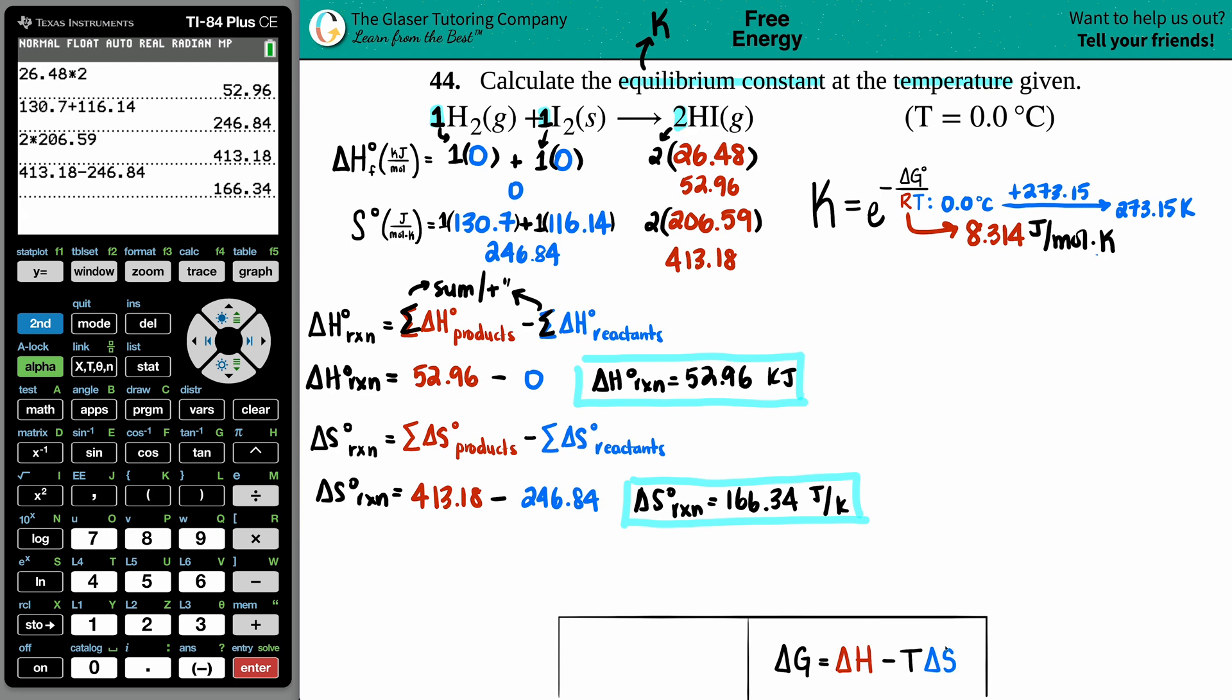We finally found the delta H, we finally found the delta S, we have the temperature - that was the 273.15 - and we can solve for delta G. Wait a minute, my delta H is in kilojoules and my delta S is in joules - they have to be the same unit. Ultimately, look back at your formula - according to the R value, it's got to be in joules.